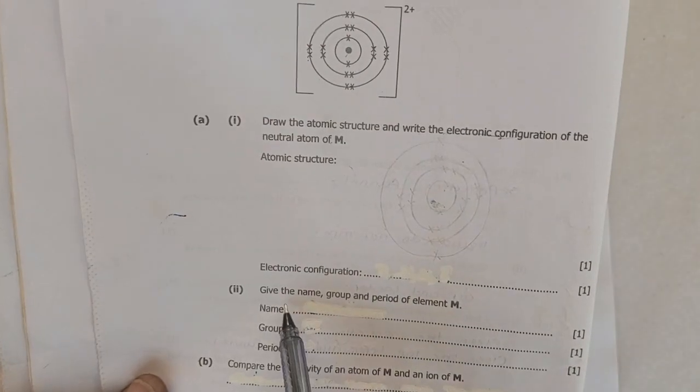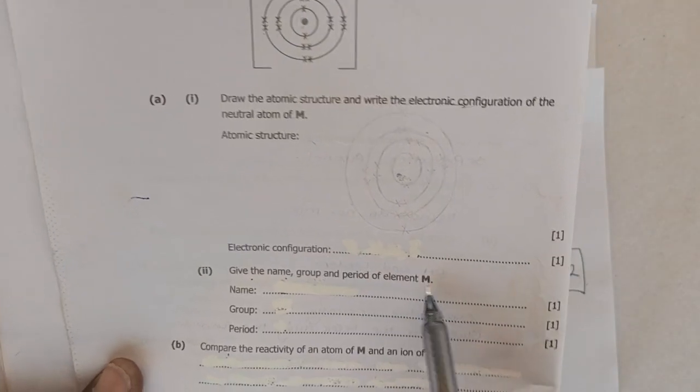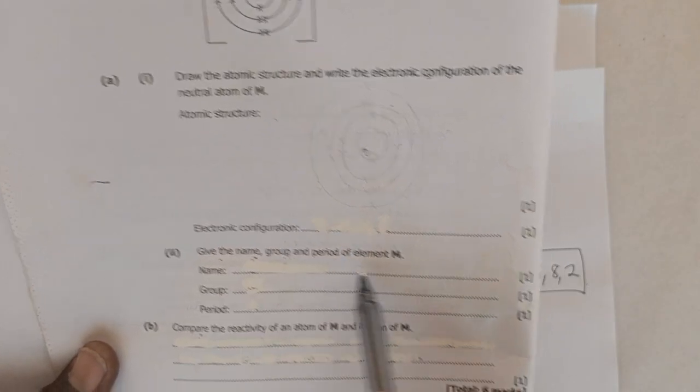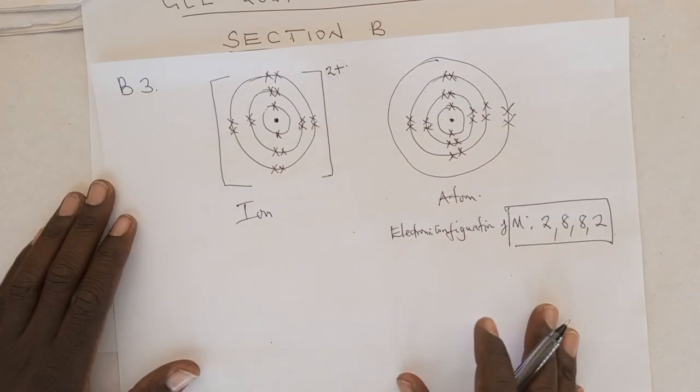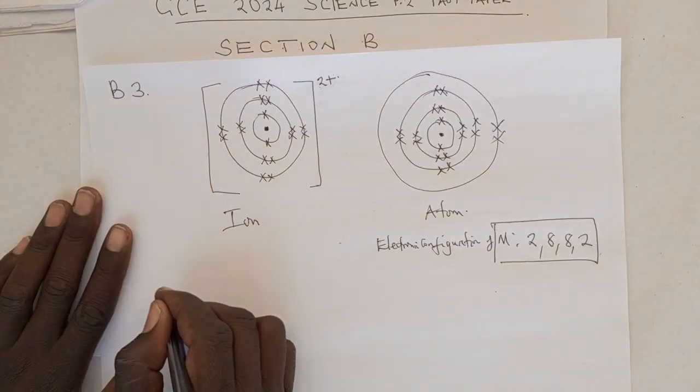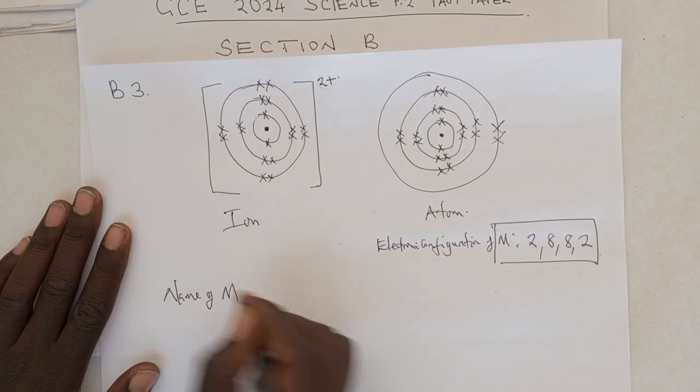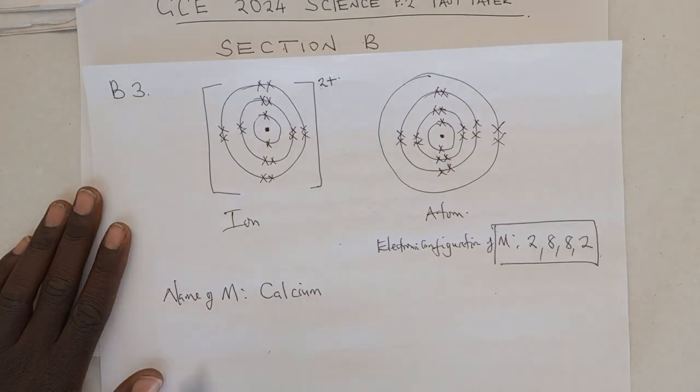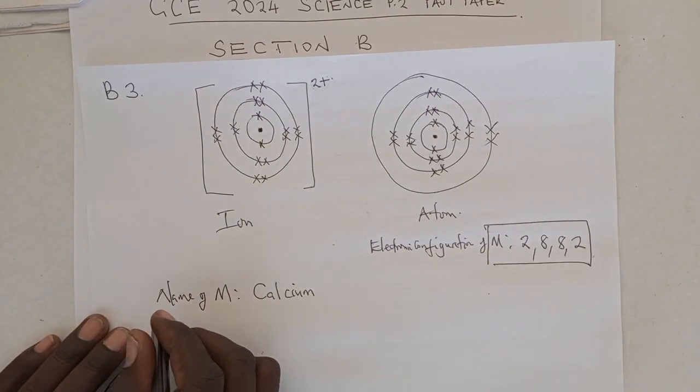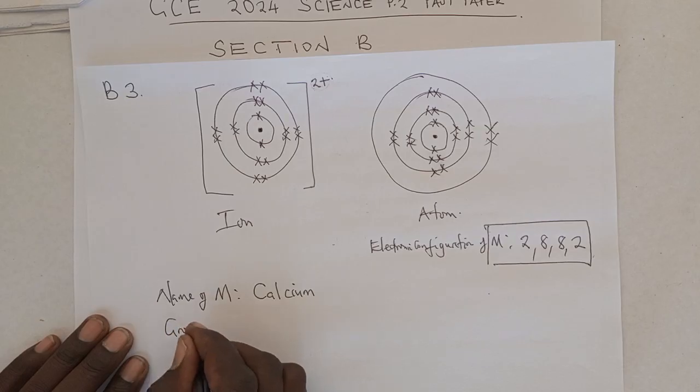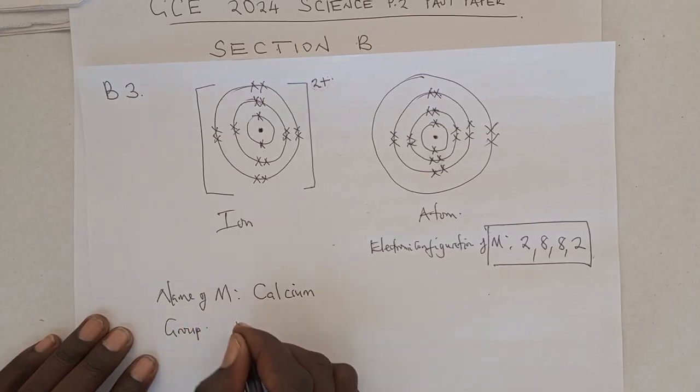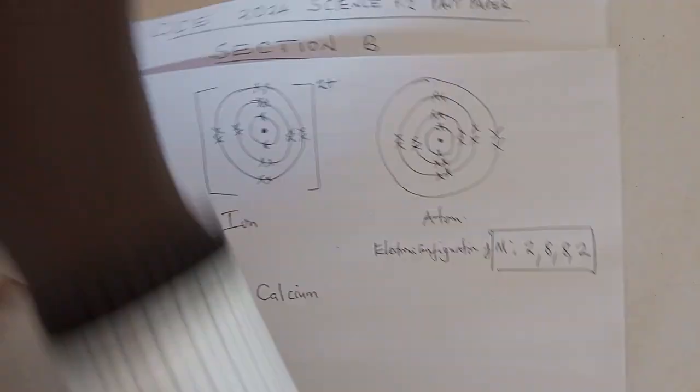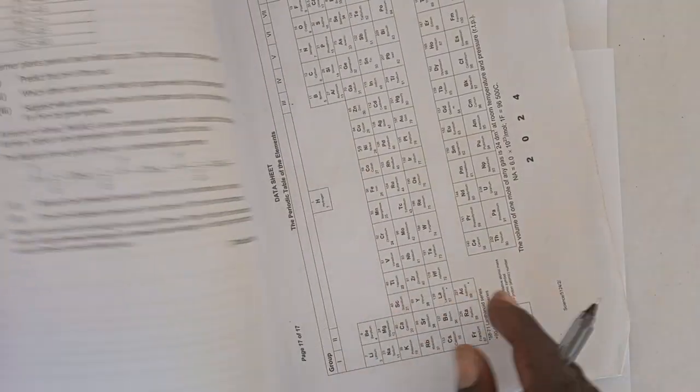We move on to the next question. The next question is asking us to give the name, group and period of M. Give the name, group and period of M. So, M, the name of M is Calcium, since it has 20 electrons. Then the group in which M is found. M, when we go to the periodic table, since we have identified the name of M, we now go to the periodic table and see where calcium is found.